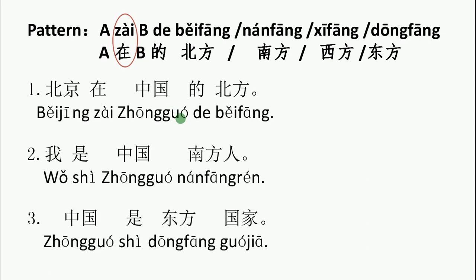二。 我是中国南方人。 I'm from the south of China. 三。 中国是东方国家。 China is an oriental country.